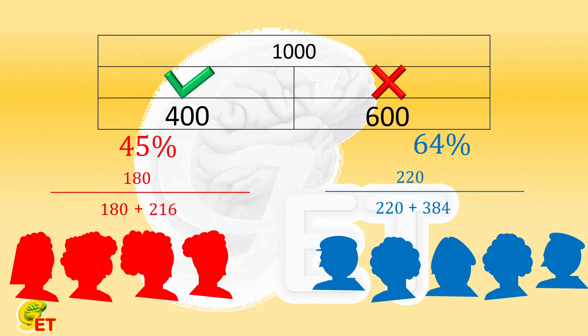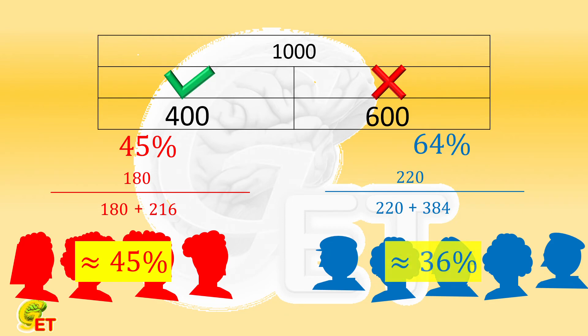Those are both easy to calculate. The pass rate for girls is about 45%, whereas the pass rate for boys is only about 36%. Therefore, the overall performance of girls is better than that of boys.